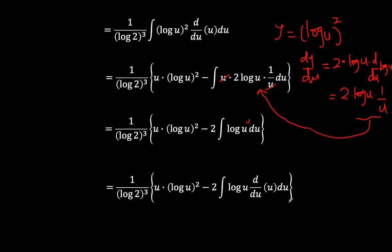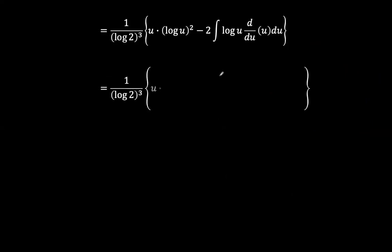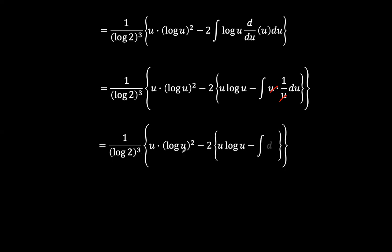And so using the same process of integration by parts, we have a nested bracket that we are going to develop. So we have minus 2 here in bracket u, log u minus bracket v, which is u times the derivative of log, which is 1 over u. So this, that would cancel. Also, and so we have 1 over natural log 2 cube in bracket u times natural log u squared minus 2 u times log u minus the integral of 1 again. And integrating 1 means that we just have a variable u as a result.